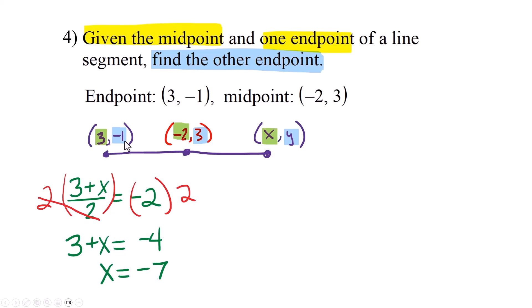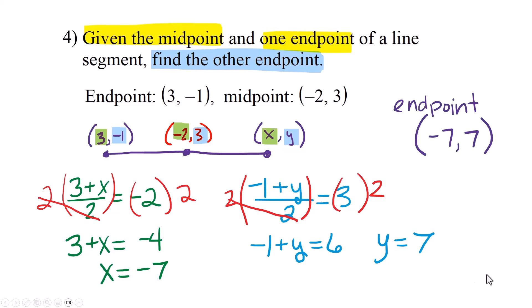Now we've got to do the same thing for the y's. This negative 1 plus this y divided by 2 equals 3. Set up the little equation. Do the same thing. Multiply both sides by 2 to cancel the fraction. We end up with negative 1 plus y equals 6 and y equals 7. So our other endpoint was negative 7 and positive 7.